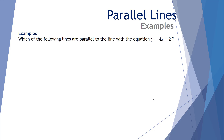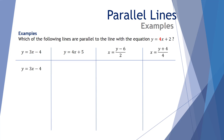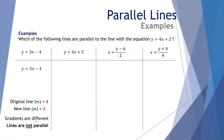Let's look at some examples for you to try. Which of the following lines are parallel to y equals 4x plus 2? Our first comparison is y equals 3x take 4. Straight away we can see this has a gradient of 3, while the original line has a gradient of 4. The gradients are different, so the lines are not parallel.